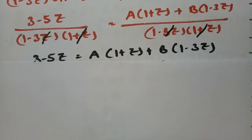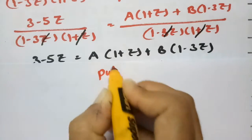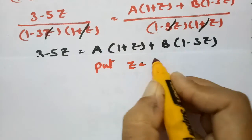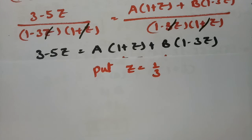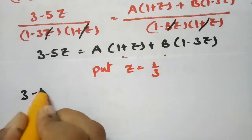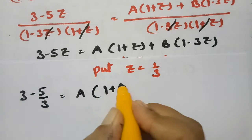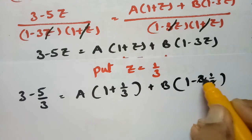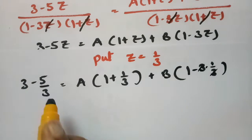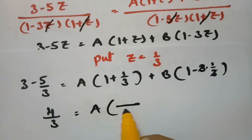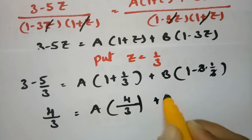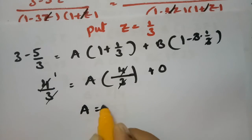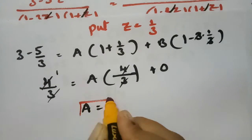To find A, put z equal to 1/3 to make the B term zero: 3 minus 5/3 equals A times (1 plus 1/3). This gives 4/3 equals A times 4/3, so A equals 1.